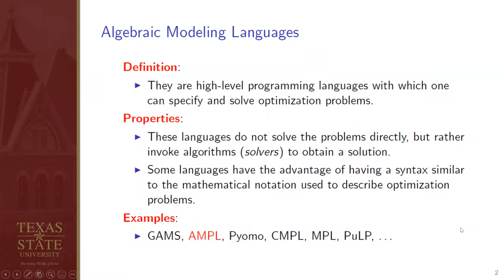Algebraic modeling languages are high-level programming languages with which you can specify and solve optimization problems. These languages do not solve the problem directly but invoke algorithmic solvers to obtain the solution. Some languages have the advantage of having syntax similar to the mathematical notation used to describe optimization problems. Examples include GAMS, AMPL, IOMO, CMPL, MPL, and CPLEX.